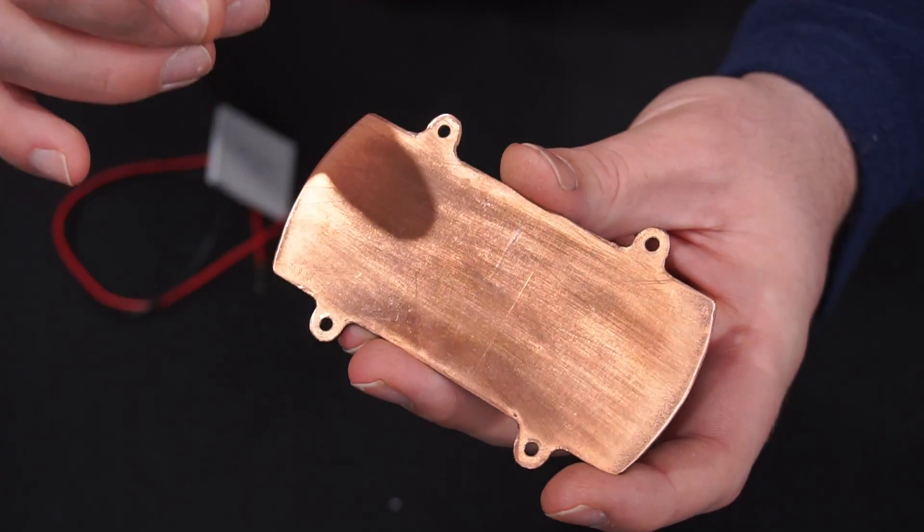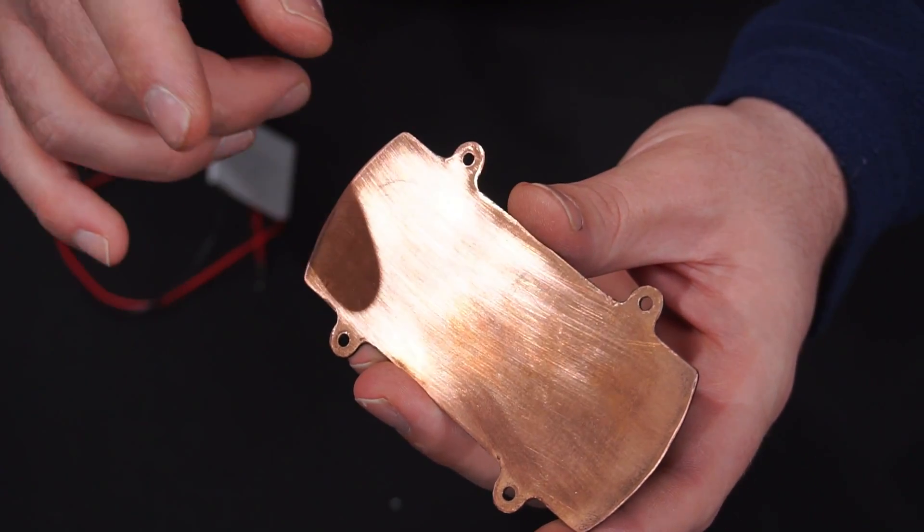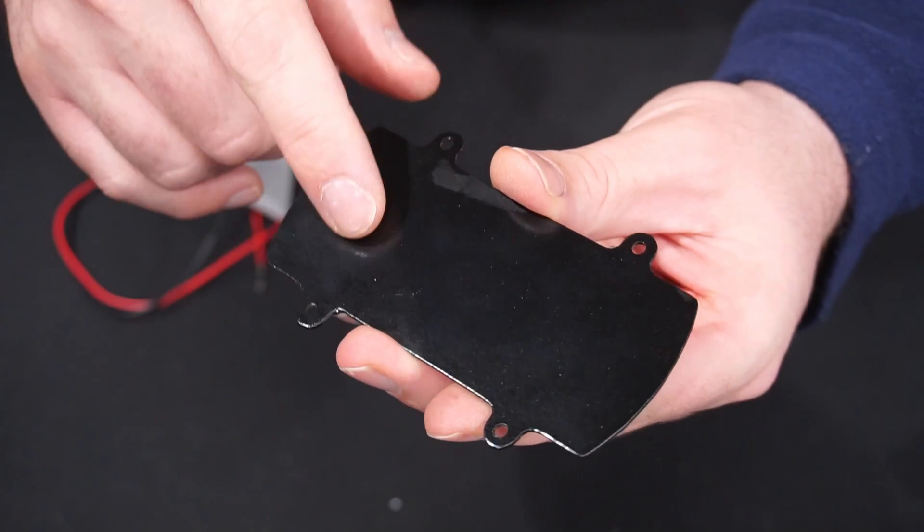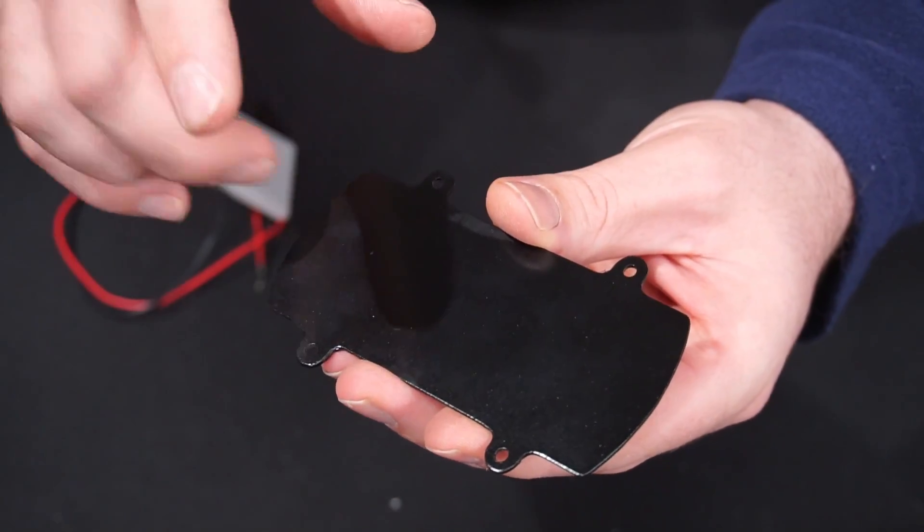This is going to be my cold plate. It is a piece of 1.2mm thick sheet copper and I've painted the top side satin black to reduce glare.